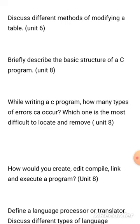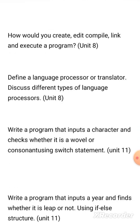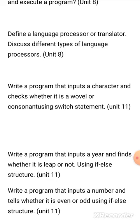From Chapter 8: briefly describe the basic structure of a C program. While writing a C program, how many types of errors can occur, and which one is the most difficult to locate and fix? Next: how would you create, edit, compile, link, and execute a program? Also from Chapter 8: define language processor or translator and discuss different types of language processors.